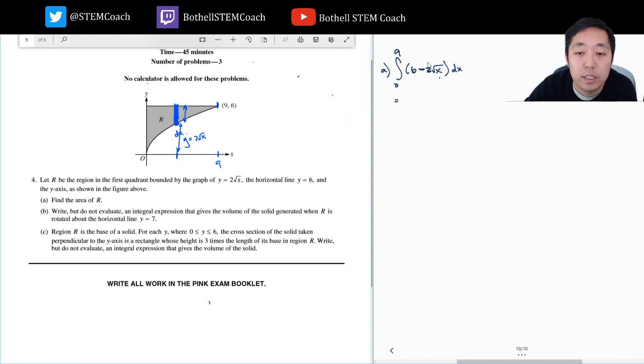So let's integrate this. I always write this as x to the 1 half so I can apply the power rule directly. So this is 6x minus 2x add 1 divide by that, from 0 to 9.